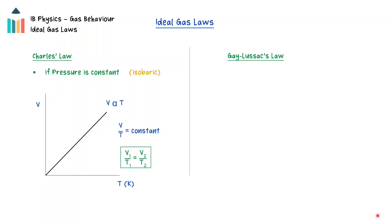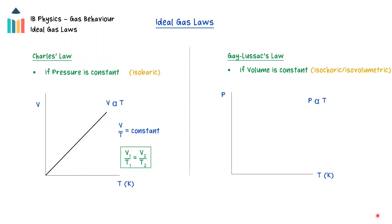Gay-Lussac's law, also known as the pressure law, states that under constant volume, the pressure of an ideal gas is directly proportional to its absolute temperature. In thermodynamics, this is known as an isochoric or isovolumetric process. A graph of the pressure as a function of temperature will have a constant slope and pass through the origin. Mathematically, this can also be expressed as the ratio of the pressure to the temperature is equal to a constant.